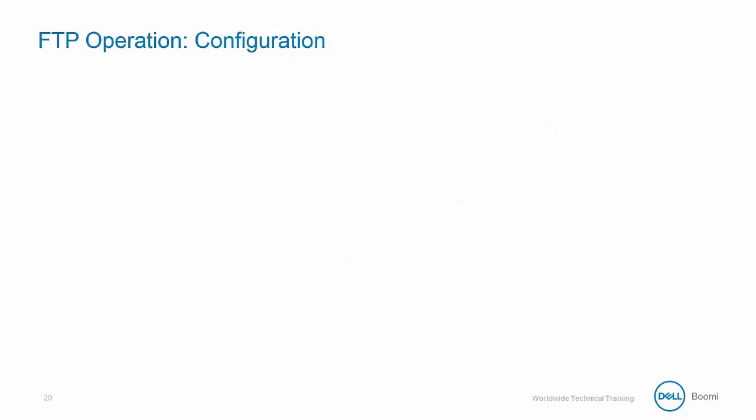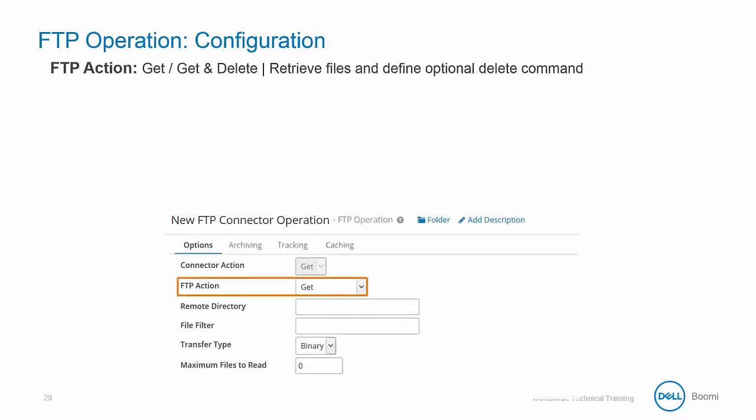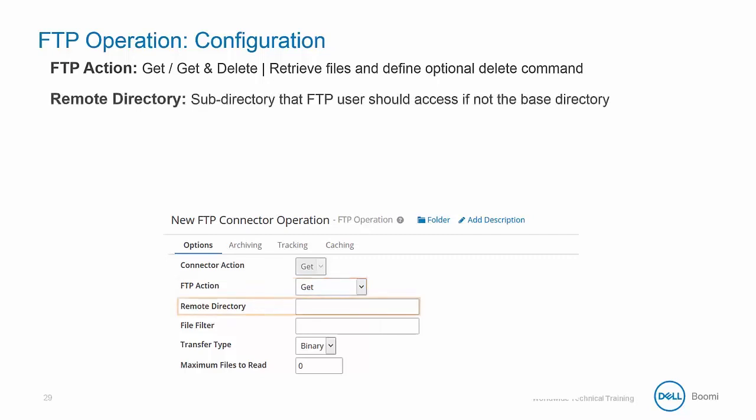First we have our FTP action, where you can select get or get-and-delete. This will retrieve the files and defines an optional delete command. Next we have the remote directory, which identifies the subdirectory if the FTP user needs access deeper than the base directory.